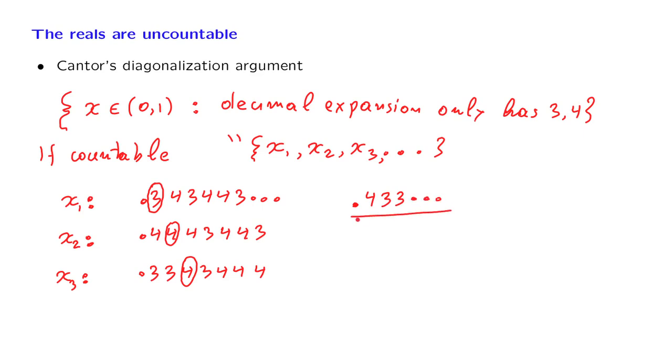This number that we have constructed here is different from the first number. They differ in the first digit. It's different from the second number. It's different in the second digit. It's different from the third number because it's different in the third digit, and so on. So this is a number, and this number is different from xi for all i.